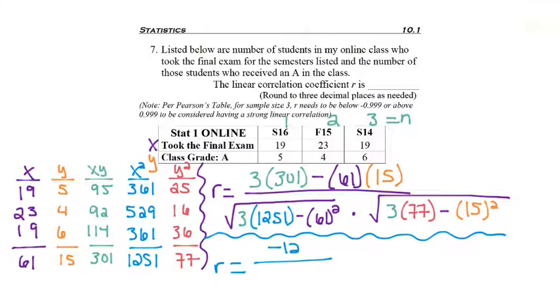Now remember, I'm going to start cleaning stuff up. For the numerator, I just typed in 3 times 301 minus 61 times 15 and got negative 12. In the denominator, I'm going to leave the first square root but calculate the interior. 3 times 1,251 minus 61 squared should give you 32.